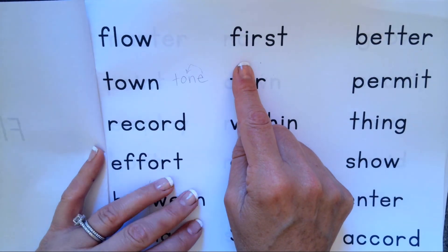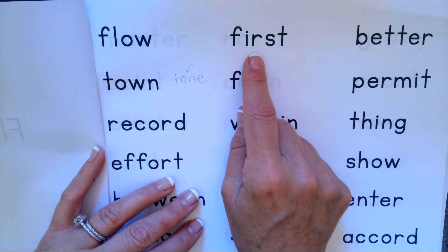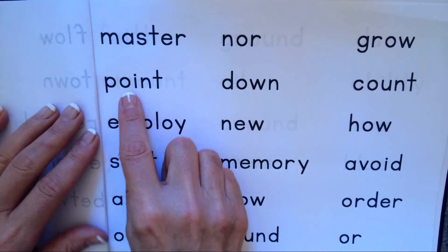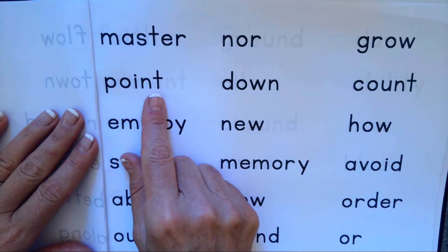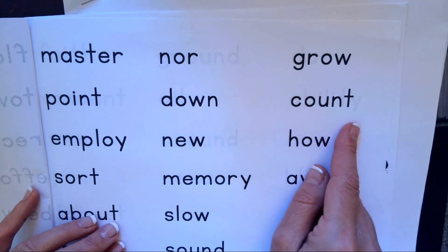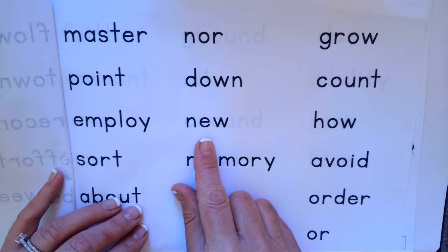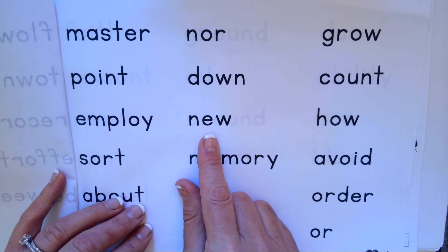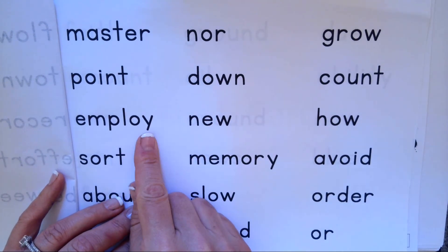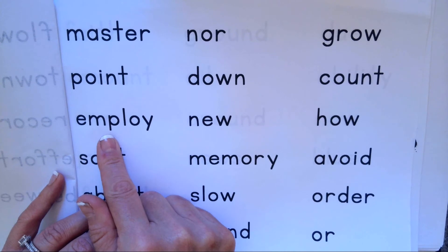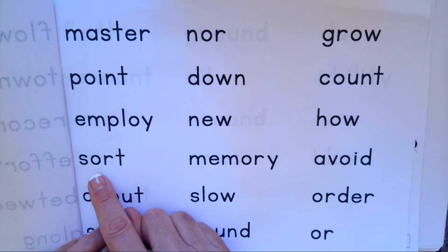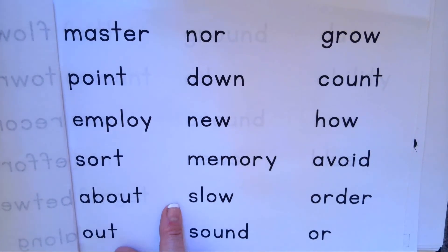I-R makes ur, F-I-R-S-T, first. O-I makes oi, P-O-I-N-T, point. O-U makes ow, C-O-U-N-T, count. E-W makes oo, N-E-W, new. O-Y makes oi, E-M-P-L-O-Y, employ. O-R makes or, S-O-R-T, sort.